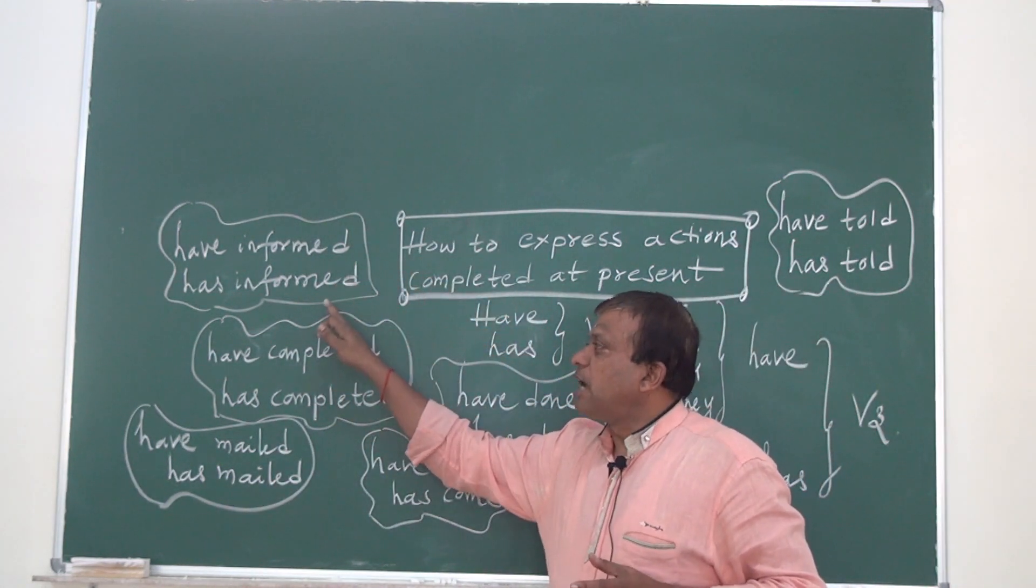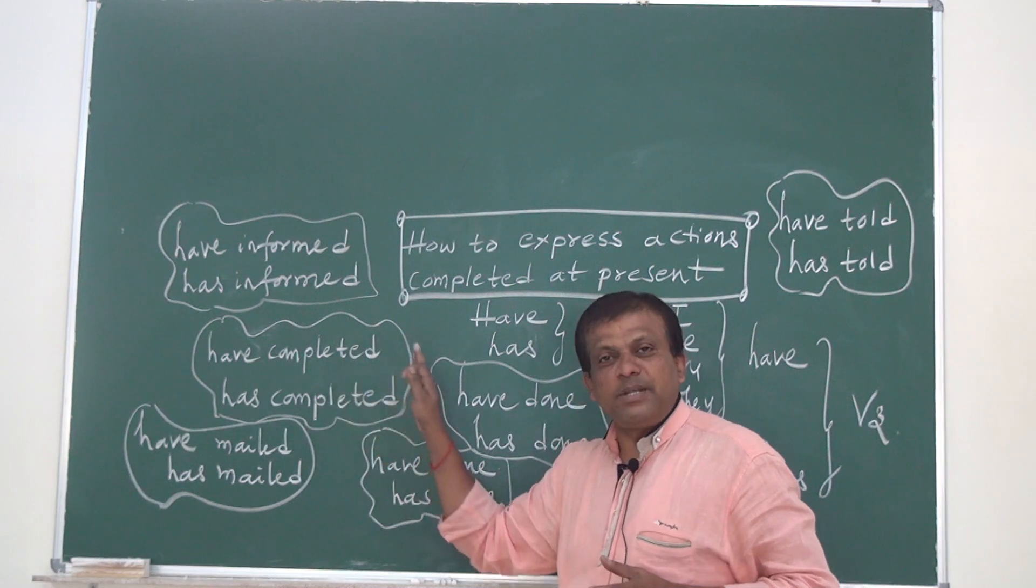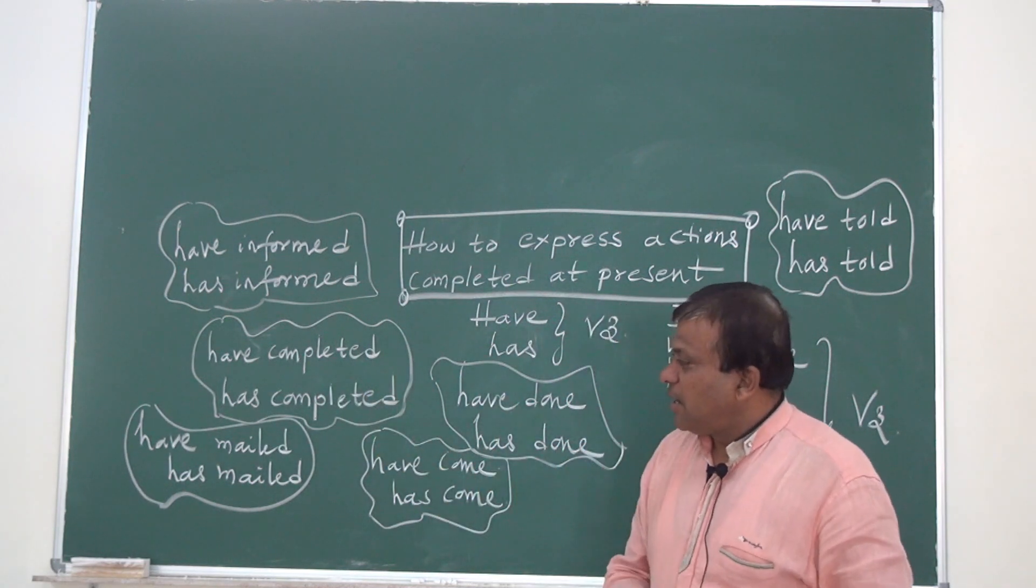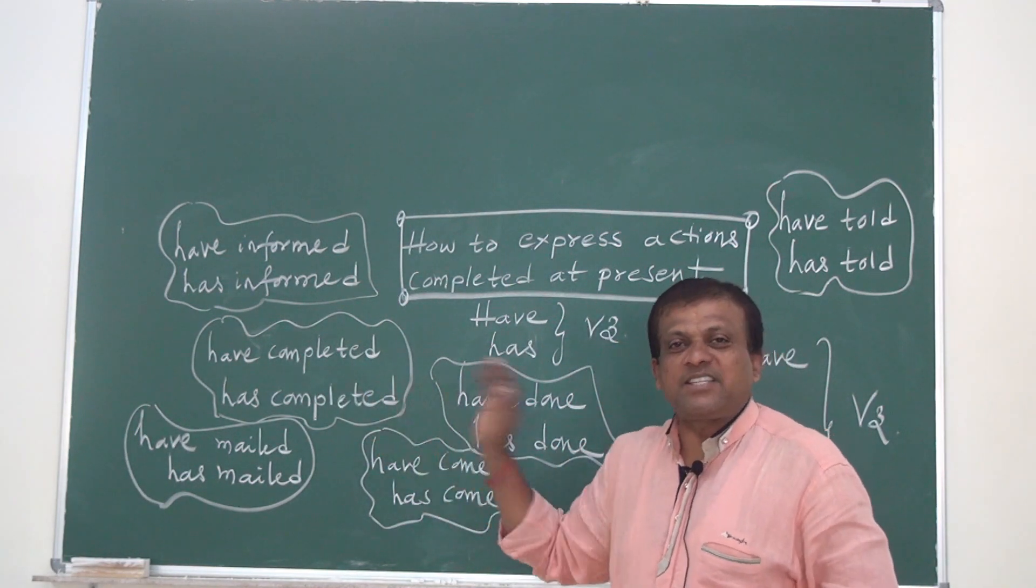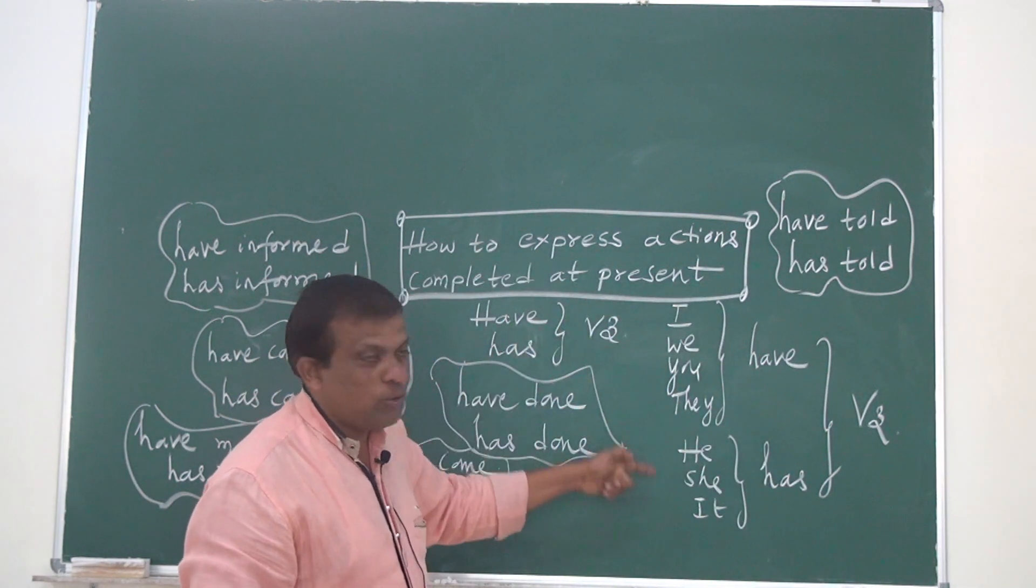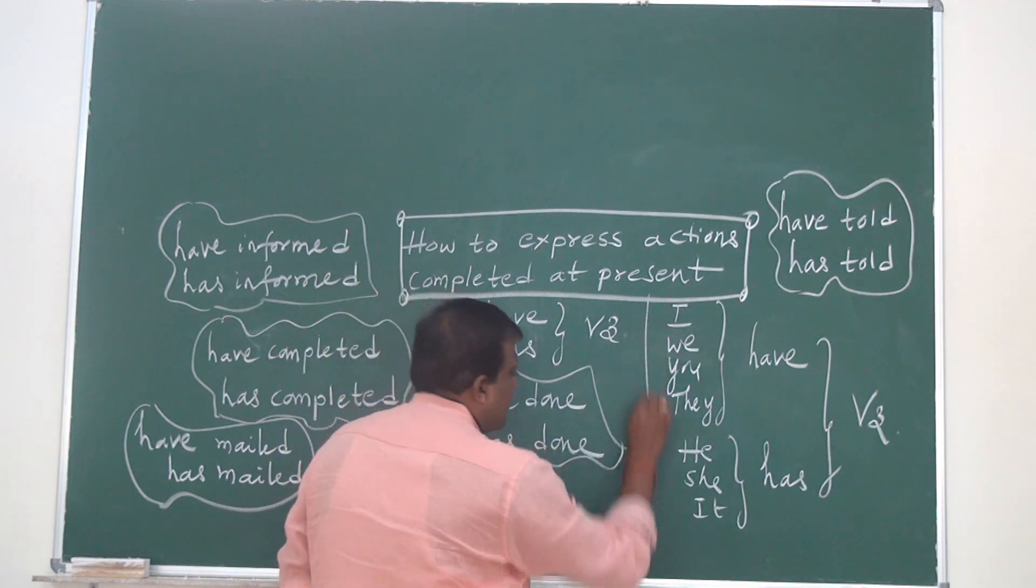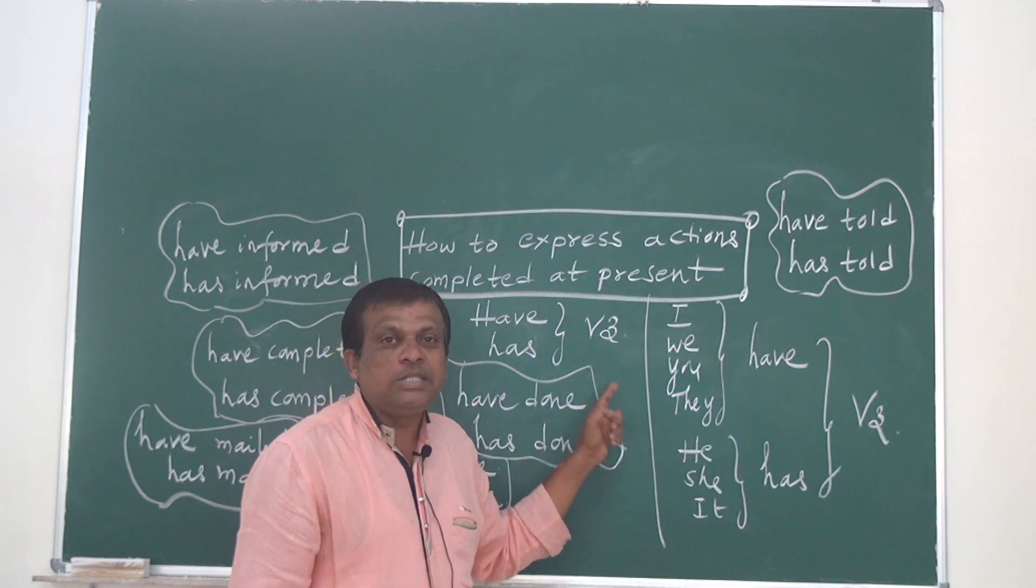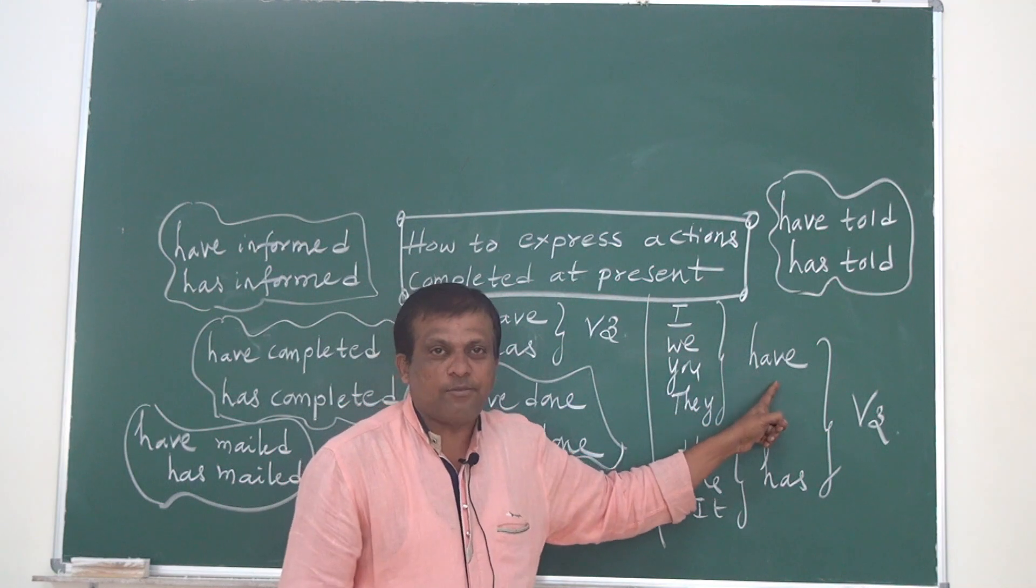Have informed, has informed. Have completed, has completed. Have made, has made. So have and has. Where do we have to use that is clear here. So for I, we, you, they, we use have.